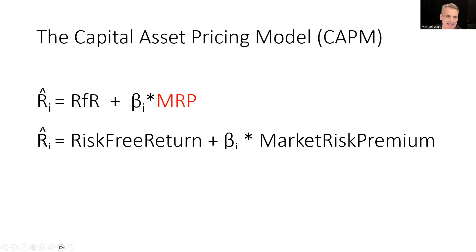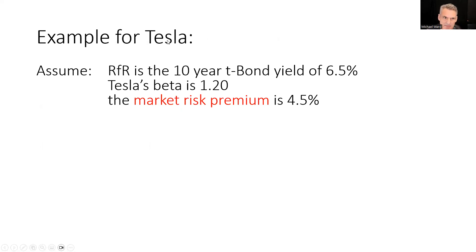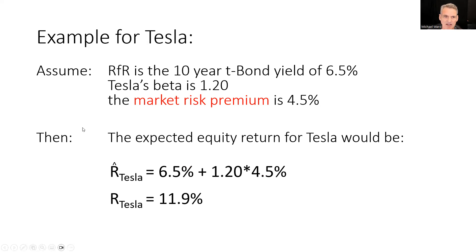It's a very simple model. It says: take the risk-free return — the long-term bond rate — plus the beta of the share times the market risk premium. For example, if we take Tesla and assume the risk-free rate (the 10-year T-bond rate) is about 6.5%, Tesla's beta is 1.2, and the market risk premium is 4.5%, the expected equity return for Tesla would be 6.5% plus 1.2 times 4.5%, giving us about 12%.